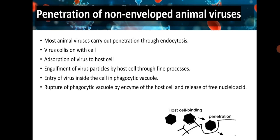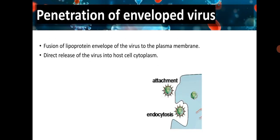Penetration of non-enveloped animal viruses: most animal viruses carry out penetration through endocytosis. Steps include collision of the virus with the cell, adsorption of virus to host cell, engulfment of virus particles by the host cell through fine processes, entry of the virus inside the cell in a phagocytic vacuole, and rupture of the phagocytic vacuole by host cell enzymes releasing free nucleic acid. For enveloped viruses, fusion of the lipoprotein envelope to the plasma membrane leads to direct release of the virus into the host cell cytoplasm.